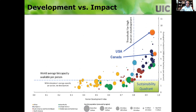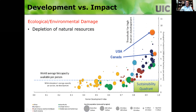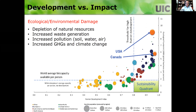However, if you look at what is happening over the years, this graph shows the human development index on the x-axis and ecological footprint on the y-axis. All the development we are talking about has come with a lot of ecological and environmental damage. We didn't really care about depletion of natural resources, increased waste generation, increased pollution, increased greenhouse gas emissions and climate change, and we ignored life cycle sustainability. Now we are realizing this is not the way to go forward — we should be thinking differently, particularly paying attention to environmental issues we bring in while developing infrastructure.